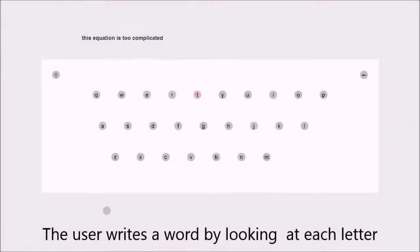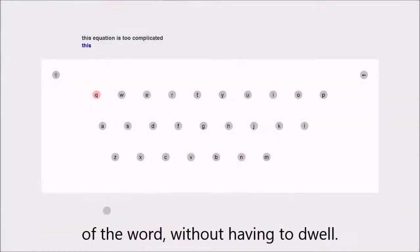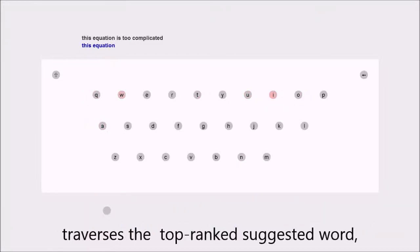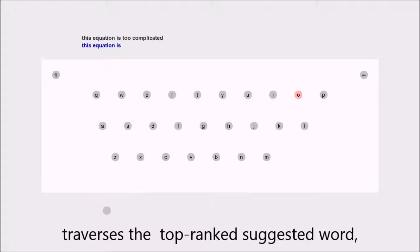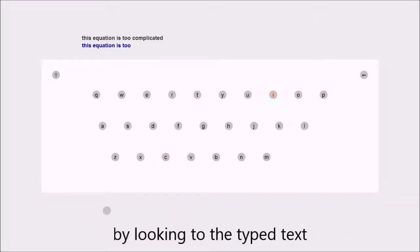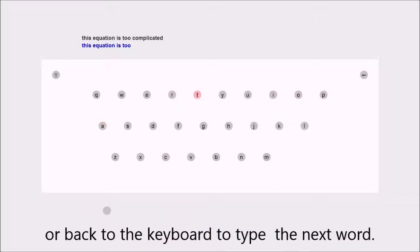The user writes a word by looking at each letter of the word without having to dwell. Then, the user looks at the bottom part of the interface, traverses the top-ranked suggested word, and accepts the highlighted candidate word by looking to the typed text or back to the keyboard to type the next word.